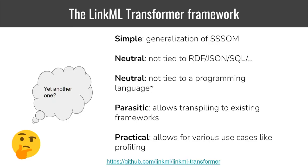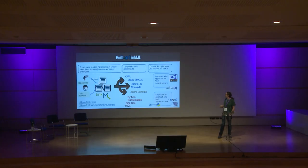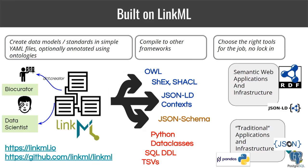With all that in mind, we actually went ahead and defined a simple data transformation language as part of the LinkML ecosystem. This is still very much in its early days. LinkML is a polyglot data modeling language that essentially parasitizes a bunch of other frameworks — you can define your data models using LinkML and then use them in a semantic web context, or in a more traditional data modeling context with JSON Schema, SQL schemas, Python Pydantic objects, and so on.